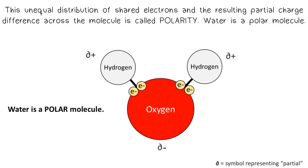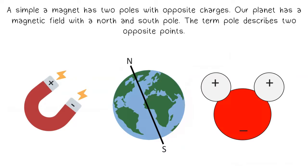Water is a polar molecule. A simple magnet has two poles with opposite charges. Our planet has a magnetic field with the north and south pole. The term pole describes two opposite points.